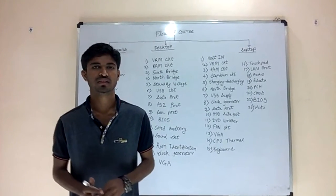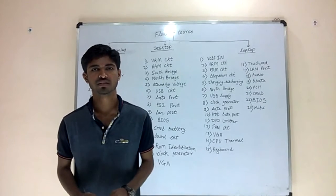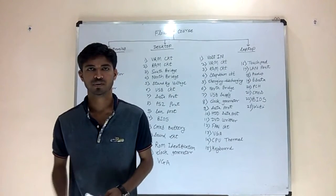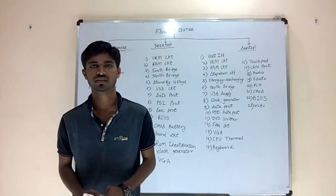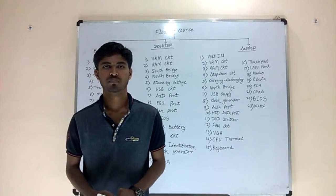Then we are going to see circuits in the laptop and desktop. As you know, difference between the desktop and laptop: desktop contains 15 circuits and laptop contains 23 circuits. First, we are going to see basic components.